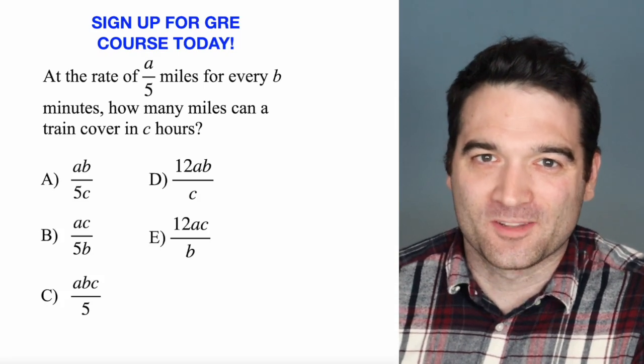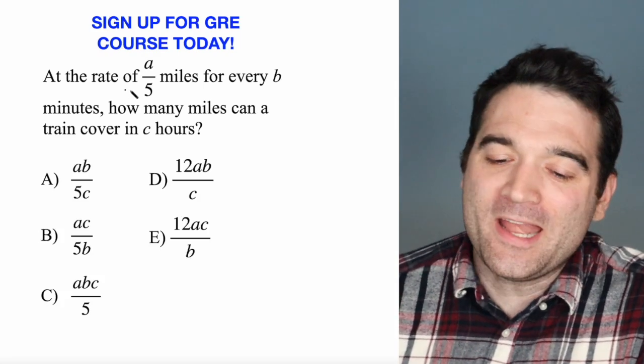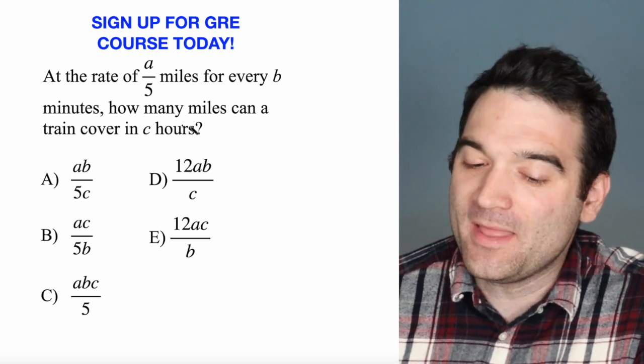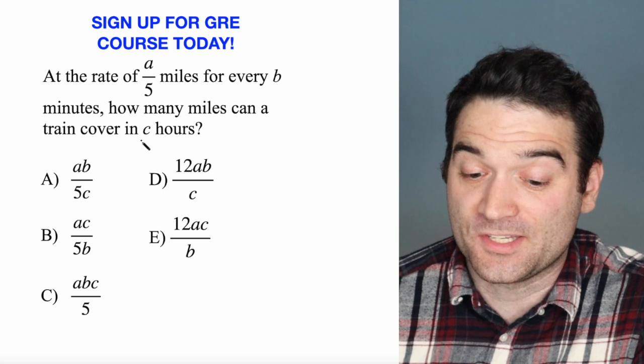Here's a GRE algebra question. Let's take a look. At the rate of A over 5 miles for every B minutes, how many miles can a train cover in C hours?